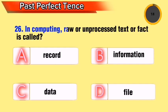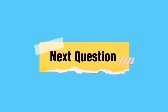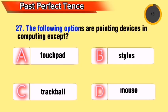Question 16: In computing, raw or unprocessed text or fact is called what? The following options are pointing devices in computing except which one?